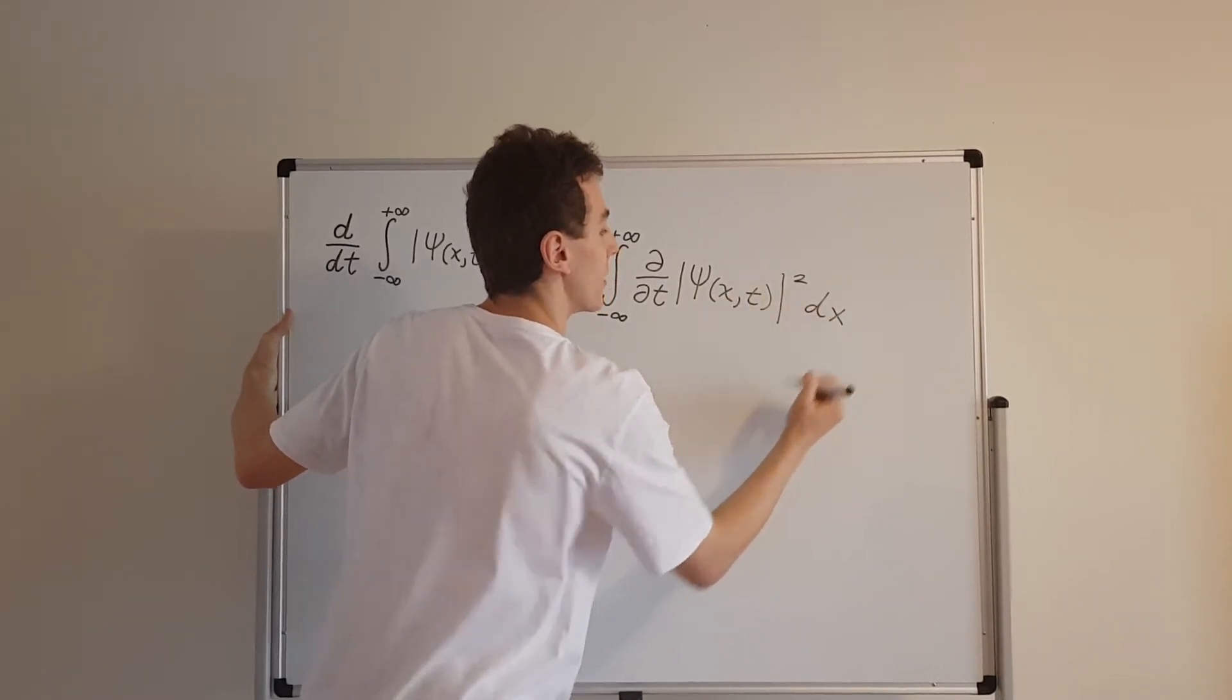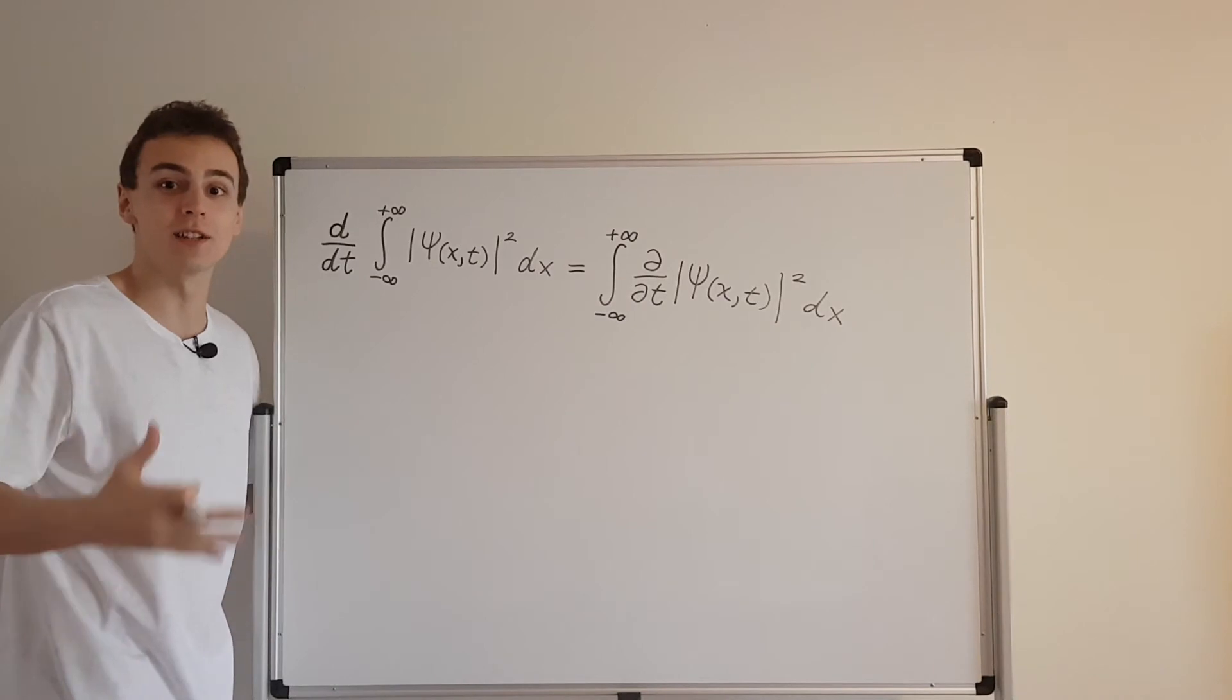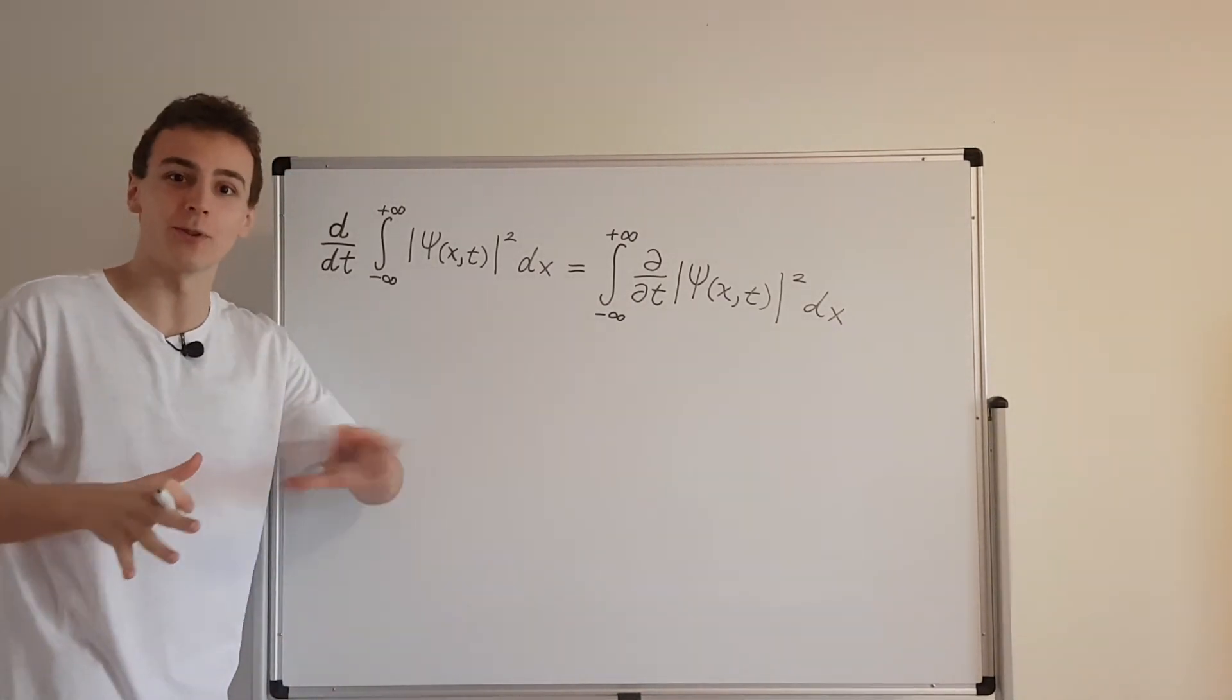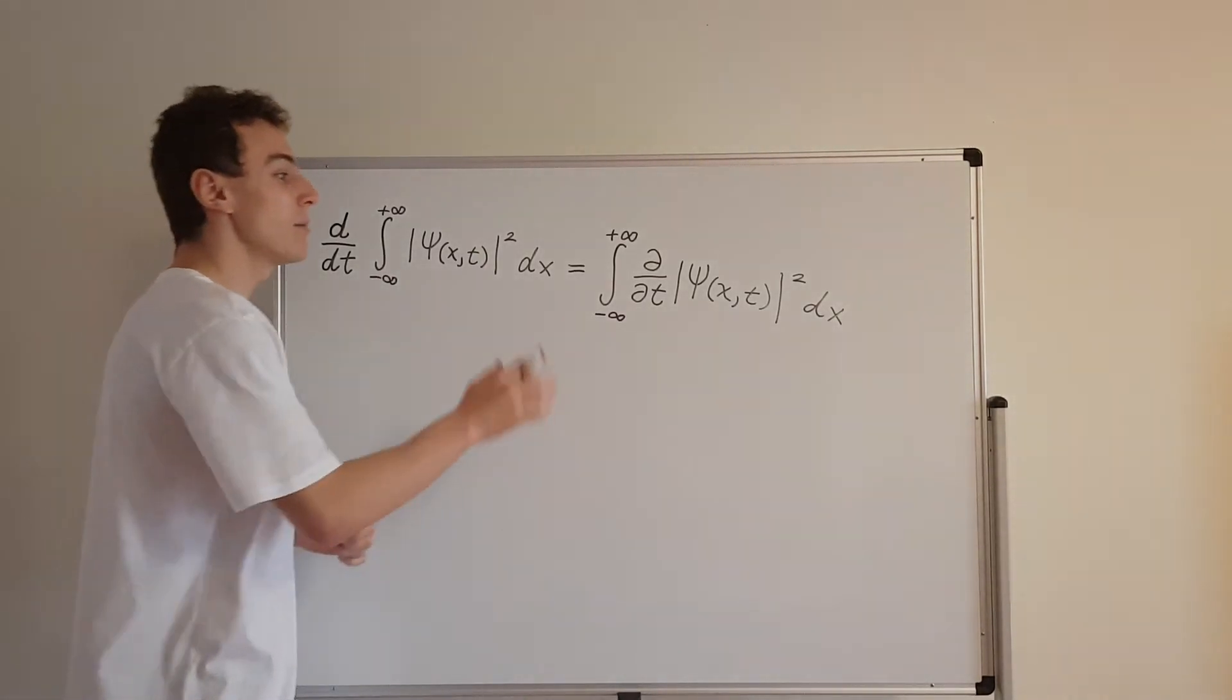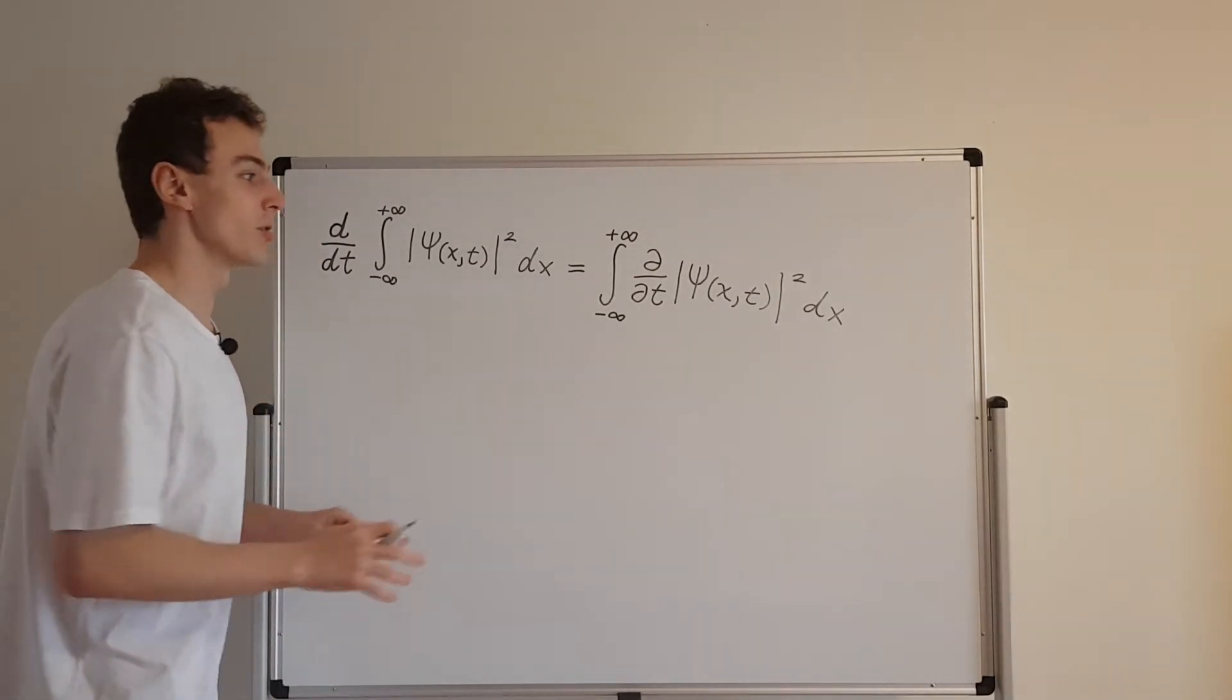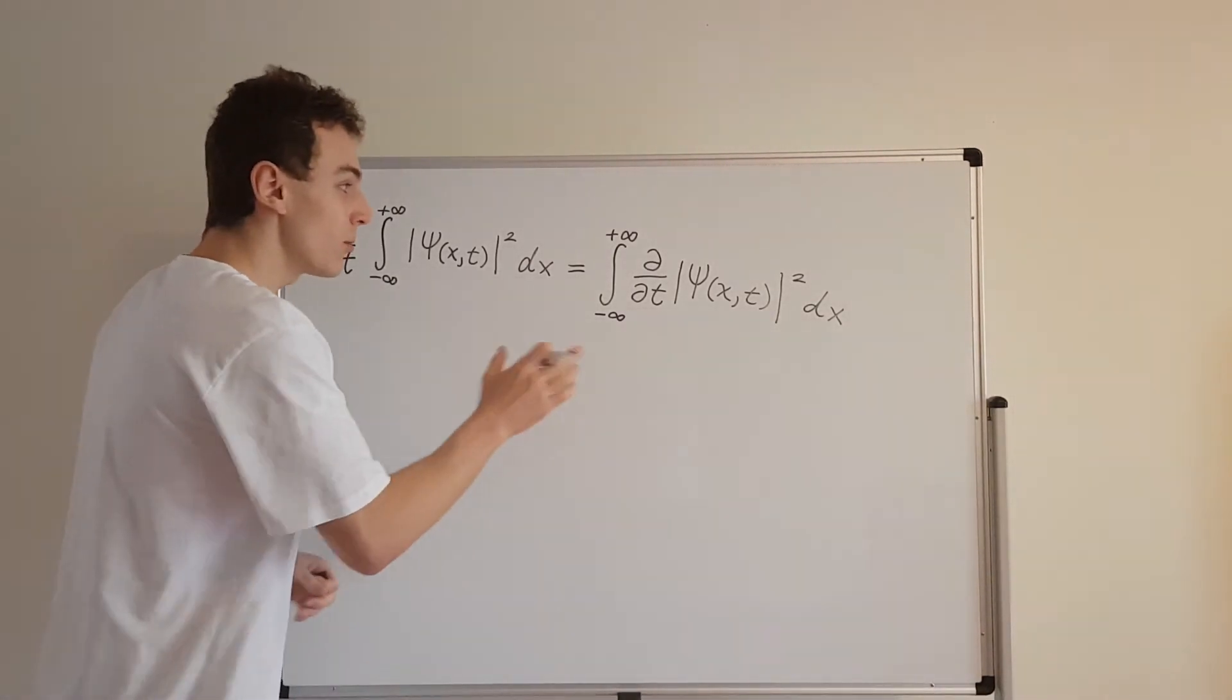And we have the same stuff over here. So this guy is actually a special case of the Leibniz rule for integration. So this is sometimes confused with the Leibniz rule for alternating series. That's a different rule. It's got the same name of the mathematician. But this is the Leibniz rule for integration. And we're looking at a special case over here. So there's a general form, which is related to differentiating underneath the integral sign.